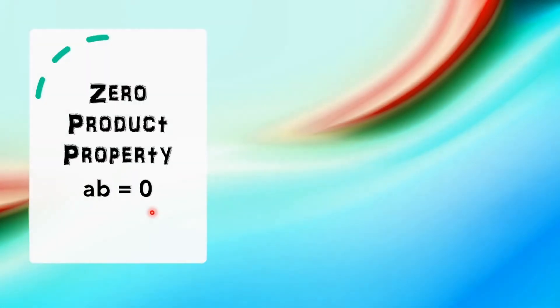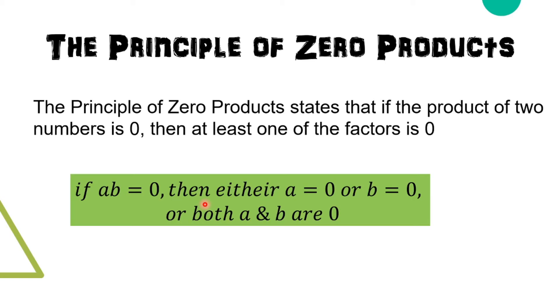Today, our topic is about the zero product property: AB is equal to zero. The principle of zero products states that if the product of two numbers is zero, then at least one of the factors is zero. So, if AB is equal to zero, then either A is equal to zero, or B is equal to zero, or both A and B are zero.